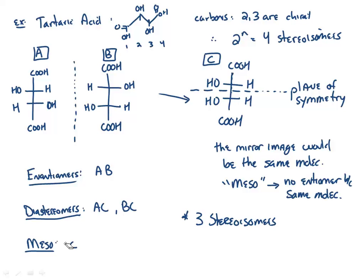To check for a meso compound: look at a molecule and ask whether it has an additional plane of symmetry. For molecules A and B (the enantiomers), there's clearly no plane of symmetry — the top and bottom differ. For the meso compound C, the same functional groups appear on each carbon, the top and bottom are identical, so there is a plane of symmetry. As a general rule: if each chiral carbon has the same set of functional groups attached, suspect a meso compound.